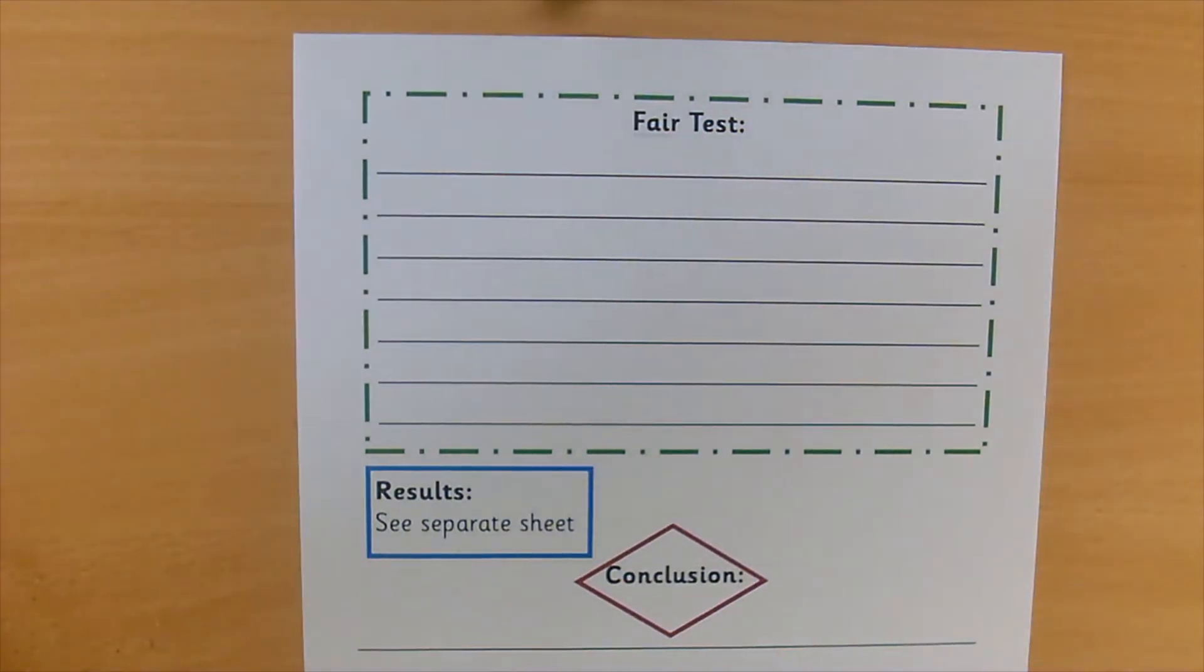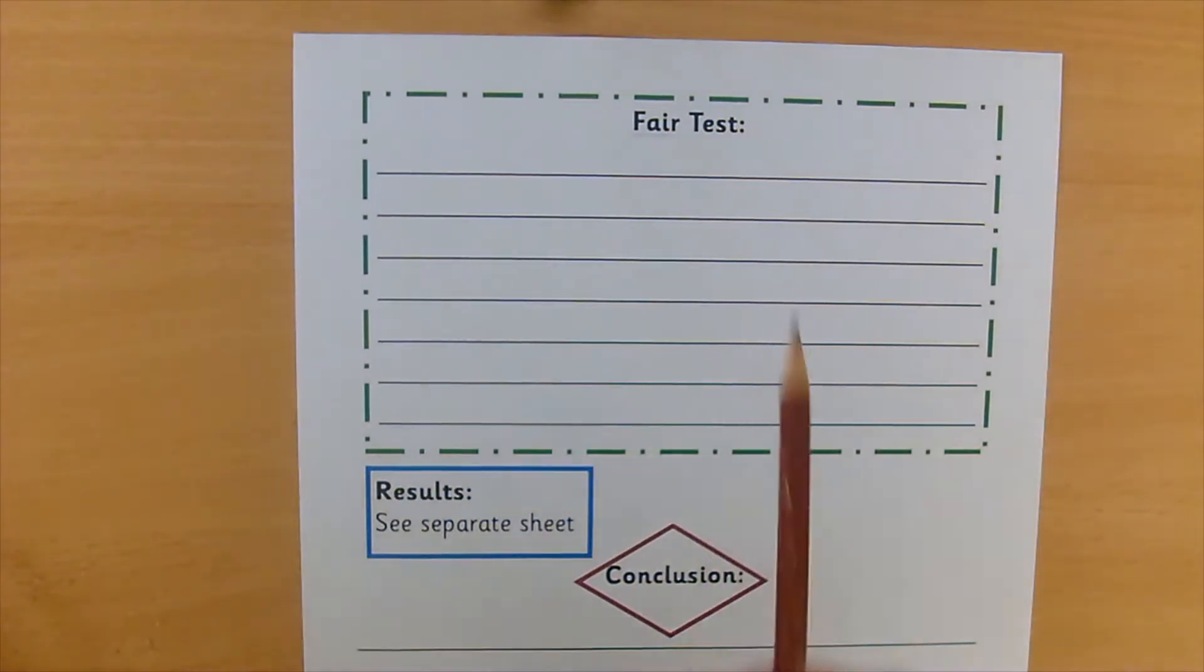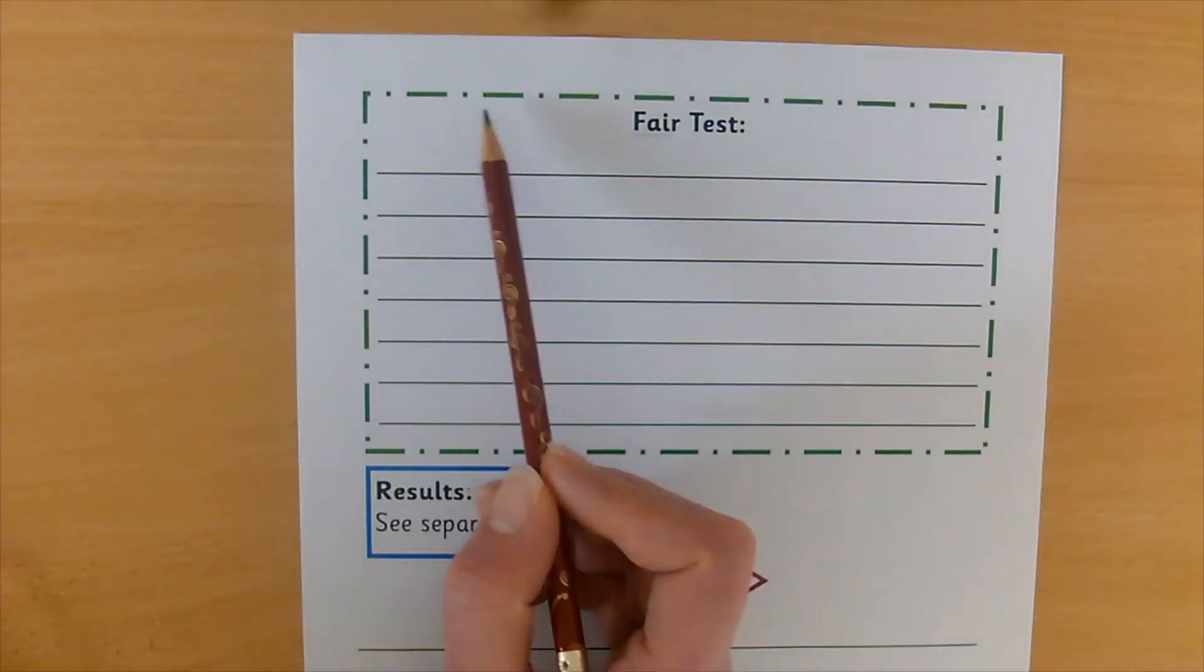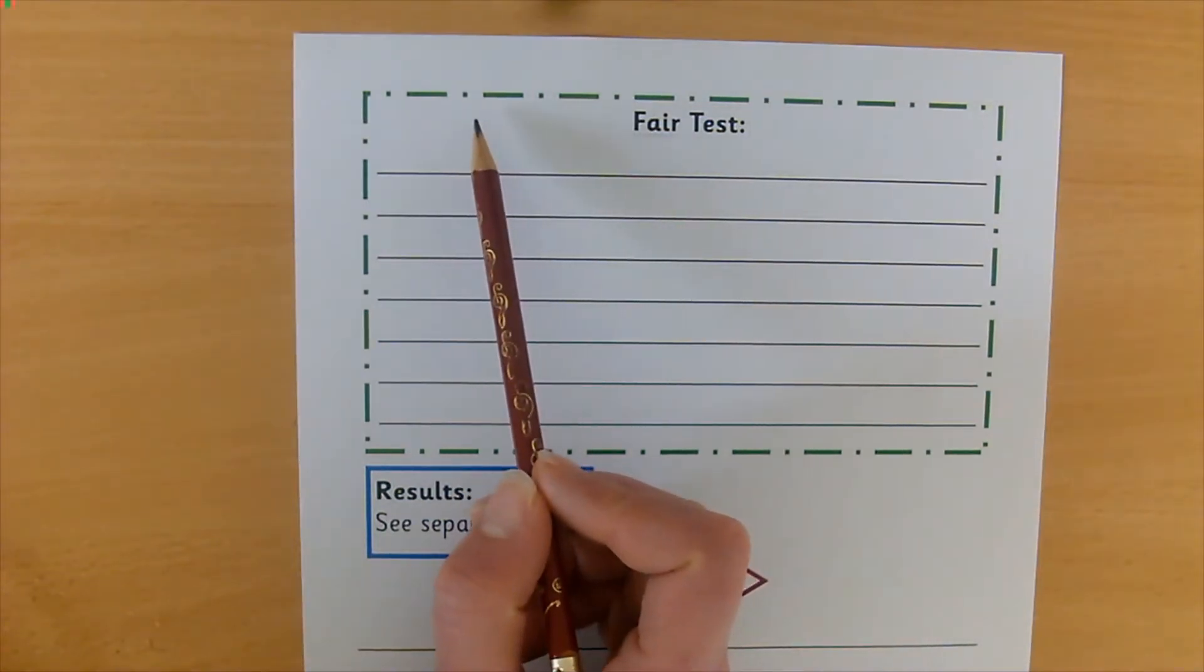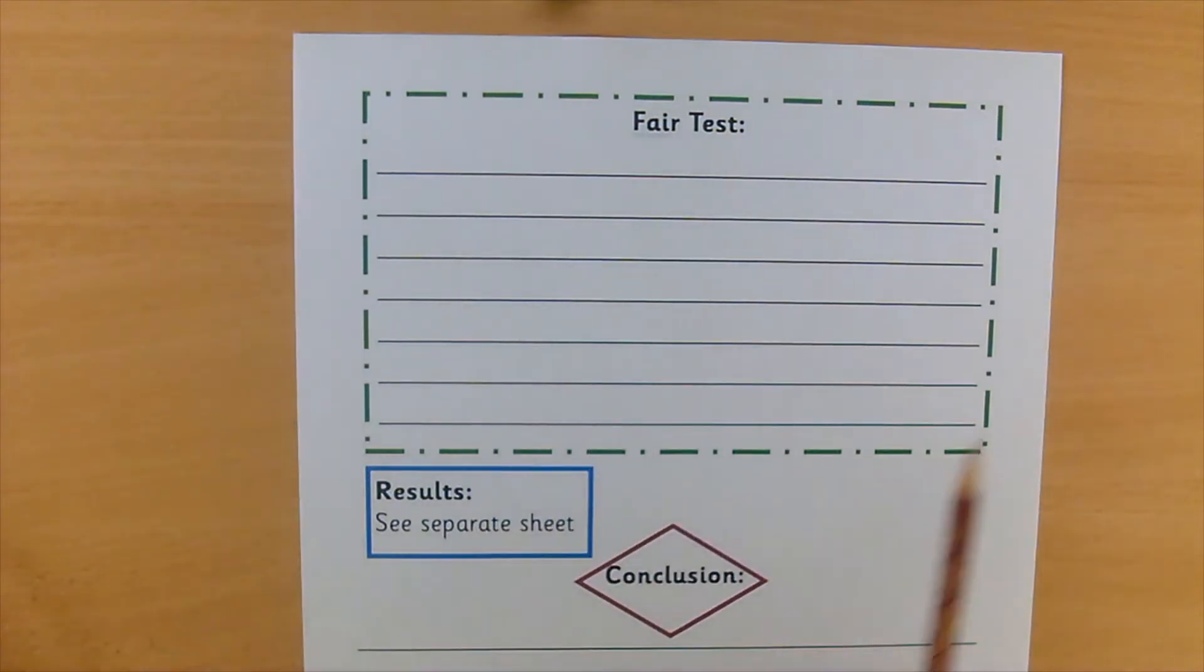Okay, welcome back. So hopefully you have thought of the same things as me. I thought that to keep it fair, you would have to use the same amount of water for each material. It wouldn't be fair if you used a tiny drop of water for one of the materials and a huge spillage for one of the other materials because you wouldn't be able to compare the two fabrics or the two materials if this amount of water wasn't the same.